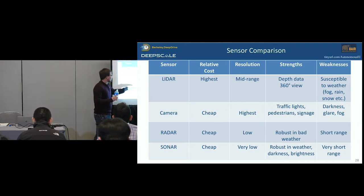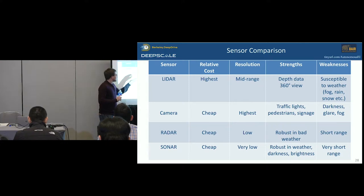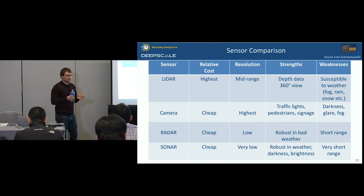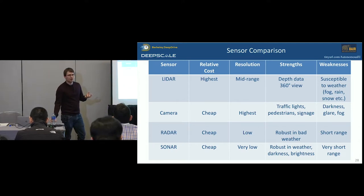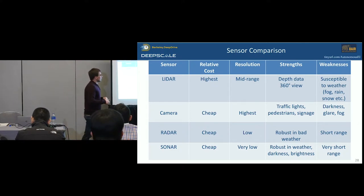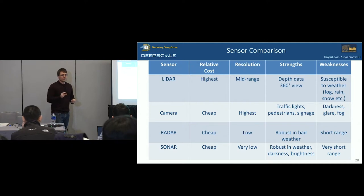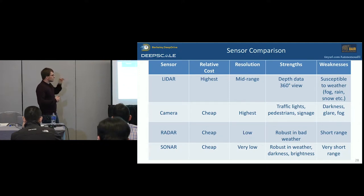LiDAR and radar both get depth from physics, which cameras — even stereo cameras — require a lot of algorithmic work to extract. But cameras are unparalleled in their ability to give you data useful for detecting individual categories of objects, which we'll get to in motion prediction as a very important signal for autonomous driving. Naturally, multiple varieties of sensors positioned around the car fill in as many gaps as possible in this set of trade-offs, hopefully without blowing out cost or size too much.